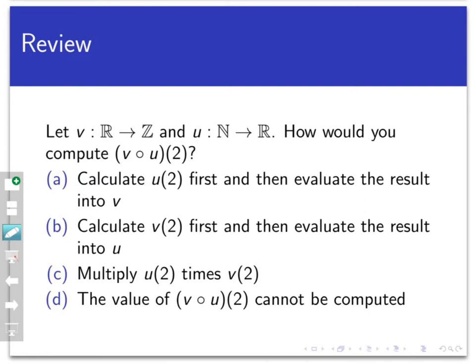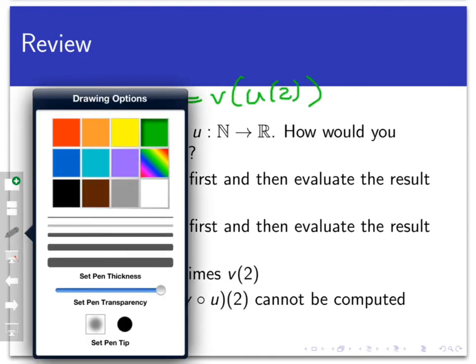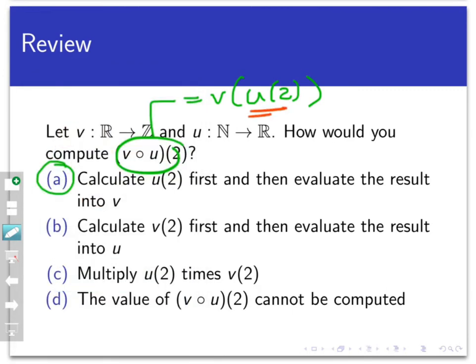So the answer here is a. By definition, v circle u of 2 is equal to v of u of 2. Now if we follow basic order of operations and do the operation in parentheses first, we would calculate u of 2, then, whatever that works out to be, evaluate the result into the function v and we'll be done.